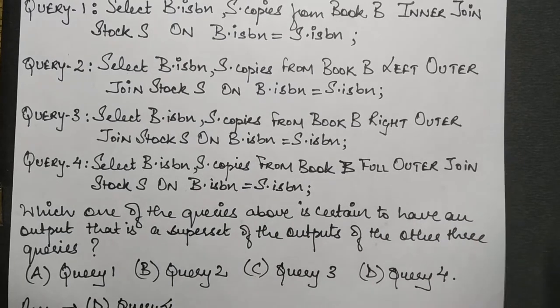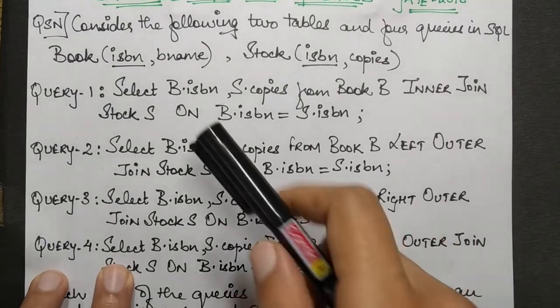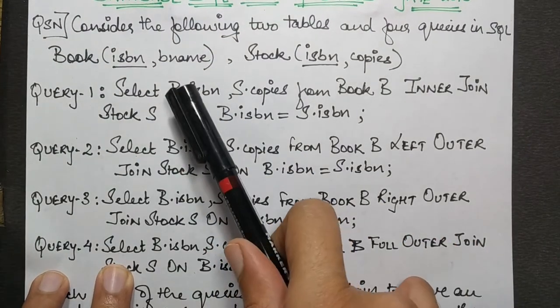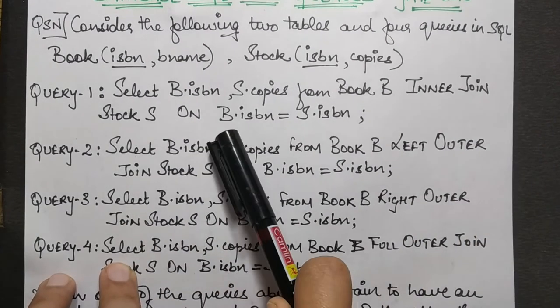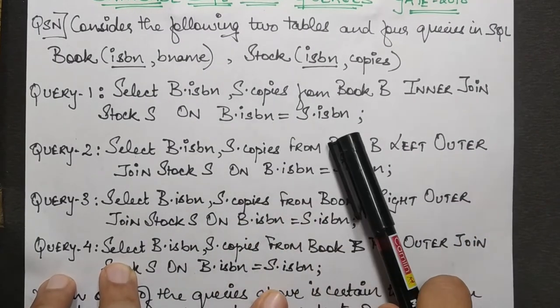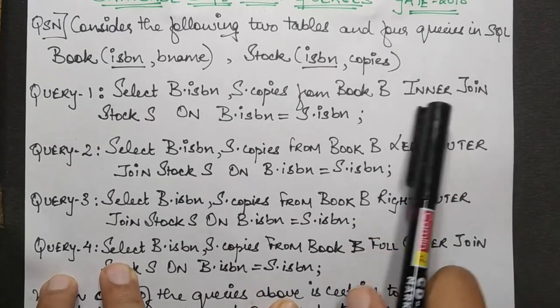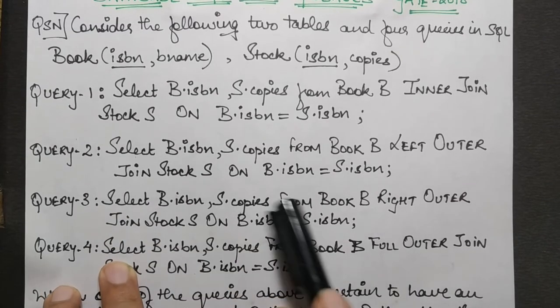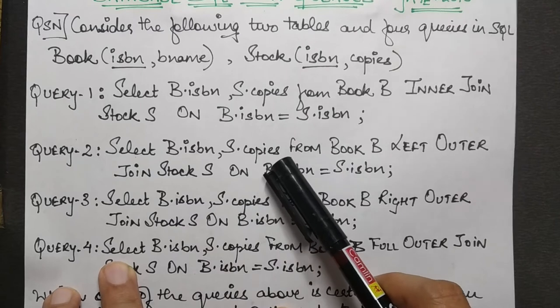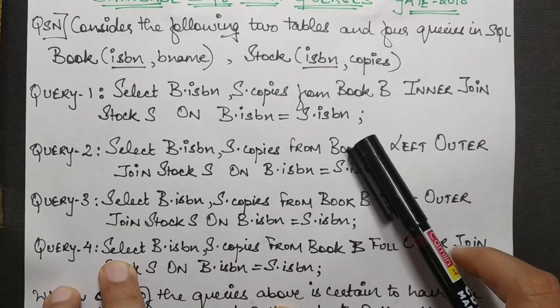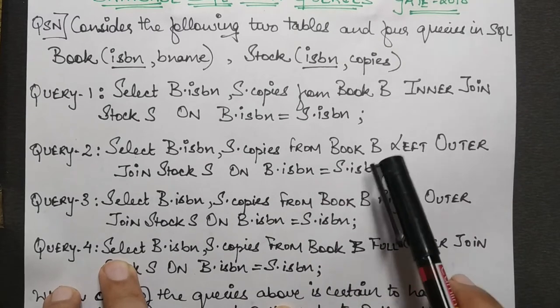Let's see what the queries are. The first query says select B.ISBN, S.copies from Book B inner join Stock S on B.ISBN equals S.ISBN. This is a simplistic case of inner join. Query two states select B.ISBN, S.copies from Book B left outer join Stock S on B.ISBN equals S.ISBN. This is a query for left outer join.